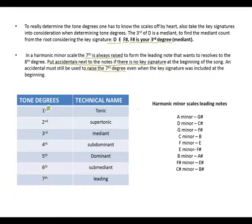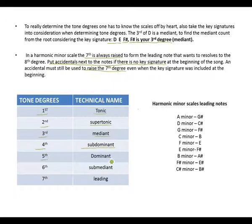Let's look at tone degrees and technical names. Your first tone degree is tonic, second is supertonic, third is mediant, fourth is subdominant, fifth is dominant, sixth is submediant, and seventh is the leading note — for harmonic minor scales the seventh is always raised.